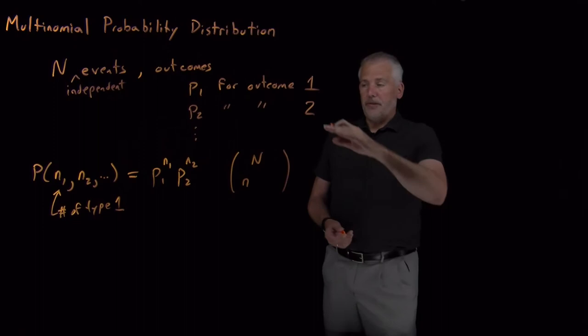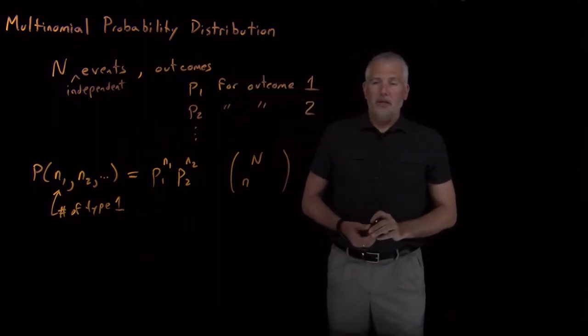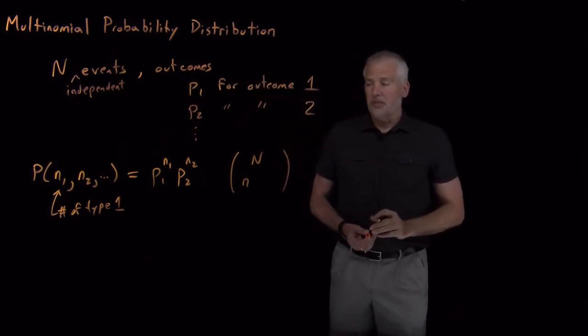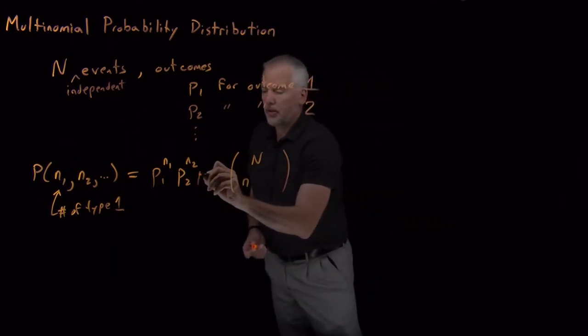So that's what the result would look like if it were a binomial distribution. That's not what we have here. We have more than just two outcomes. We have perhaps three or four or more outcomes.